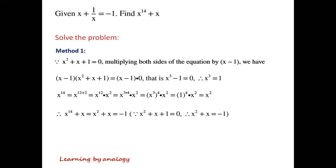So x to the power of 14 plus x equals x squared plus x equals minus 1, since x squared plus x plus 1 equals 0 means x squared plus x equals minus 1.